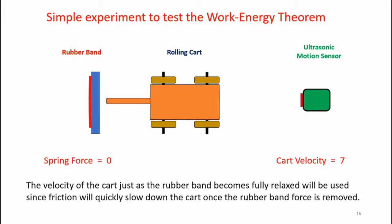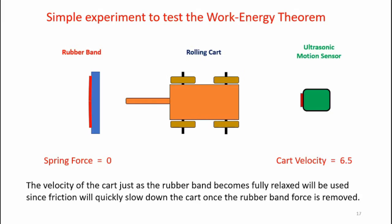However, over time, friction will reduce the velocity of the cart. So to make a valid experiment, we need to measure the velocity of the cart just as the spring force becomes zero. We'll use that velocity in our work energy theorem calculations.